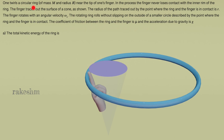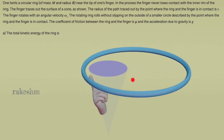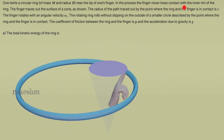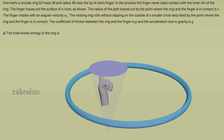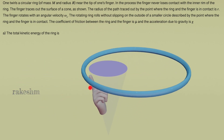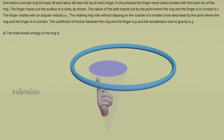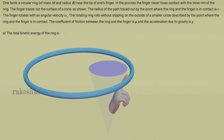One twirls a circular ring of mass capital M and radius capital R near the tip of one's finger. So this is a ring of mass capital M and radius capital R. Now we are twirling this ring. In the process, the finger never loses contact with the inner rim of the ring. So the finger is not losing contact with the inner rim of the ring.